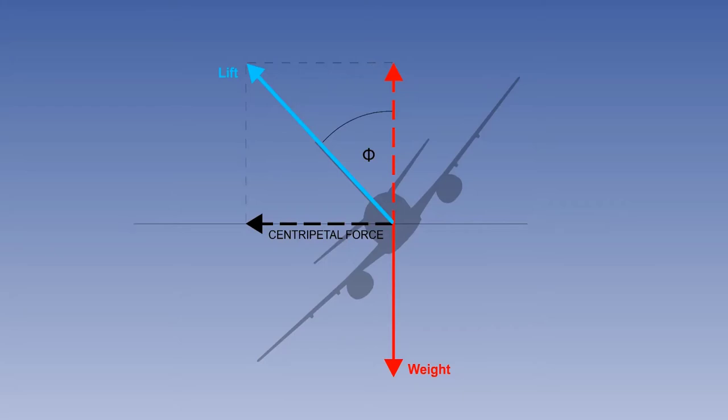In a steady level turn, if thrust is ignored, lift provides the force to balance weight and the centripetal force to turn the aircraft.